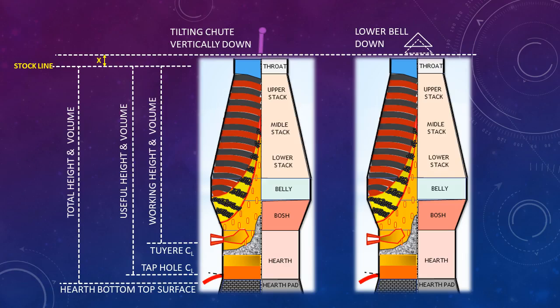What is total height and total volume of a blast furnace? From stock line to hearth pad top, the distance or height is known as total height of the furnace, and the related volume is total volume.